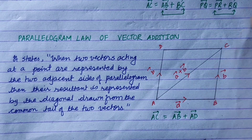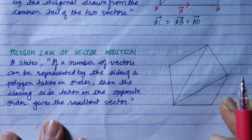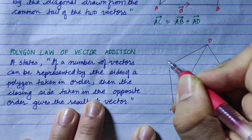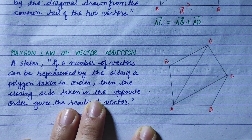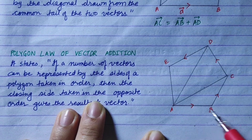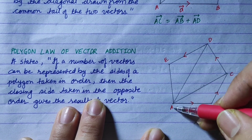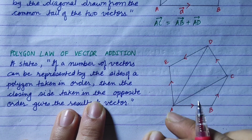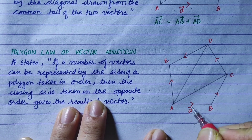Finally, we have to cover the polygon law of vector addition. We have vectors a, b, c, d represented along sides AB, BC, CD of a polygon taken in order. The last side is drawn in the opposite direction. Here is vector a, here is vector b.